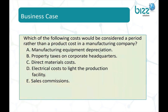The answer is: manufacturing equipment depreciation is basically a product cost. Property tax on the corporate headquarter — since the corporate headquarter is not directly involved in production, it is a period cost. Direct material cost is a product cost. Electrical cost on lighting of a production facility is a product cost. Sales commission is not a product cost; it is purely a period cost.